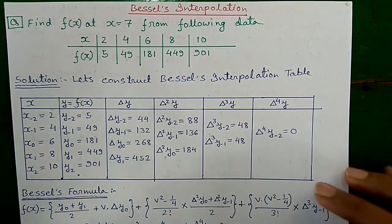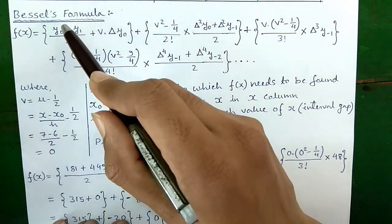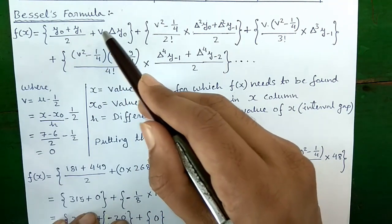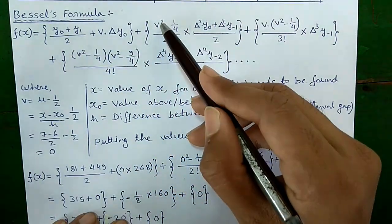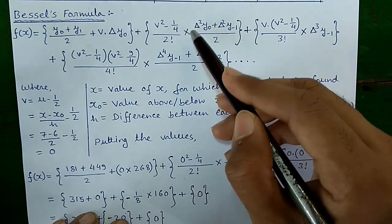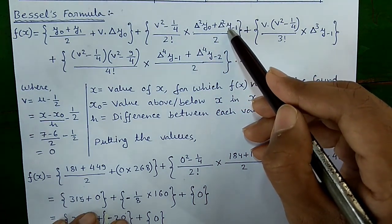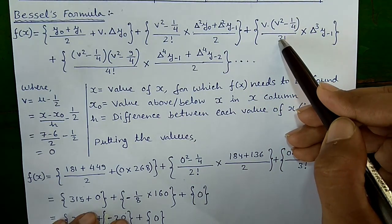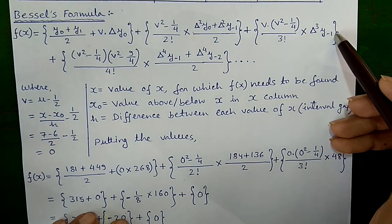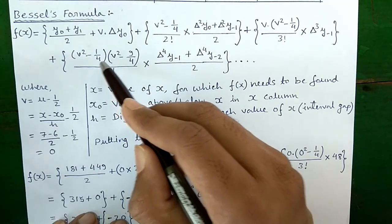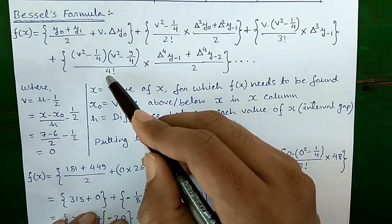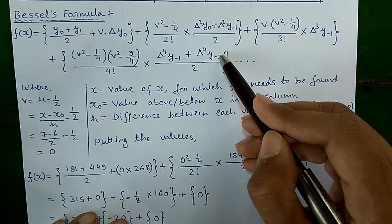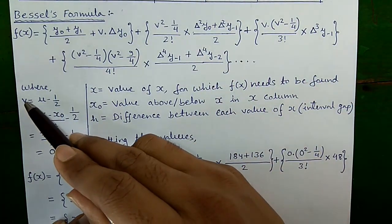To find Δ⁴y, starting from the bottom, compute differences of the Δ³y column. Next, Bessel's formula is: f(x) = (y₀ + y₁)/2 + v·Δy₀ + (v² − 1/4)/2! · (Δ²y₀ + Δ²y₋₁)/2 + v·(v² − 1/4)/3! · Δ³y₋₁ + (v² − 1/4)·(v² − 9/4)/4! · (Δ⁴y₋₁ + Δ⁴y₋₂)/2 + and so on.